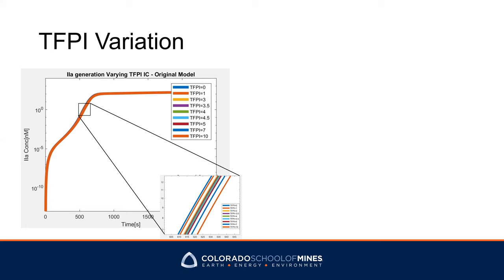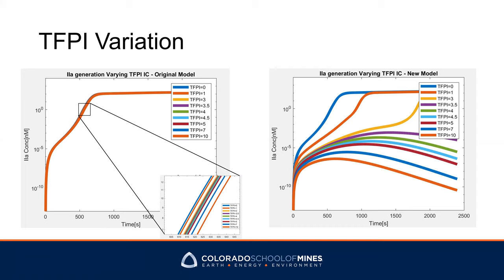On the other hand, in the new model, we can see different behavior. We see that under a low TFPI level there will be a large thrombin generation burst, whereas if we increase TFPI to a certain level — in this case between 3 to 3.5 — there will be no more thrombin burst in the system due to suppression of coagulation by TFPI.